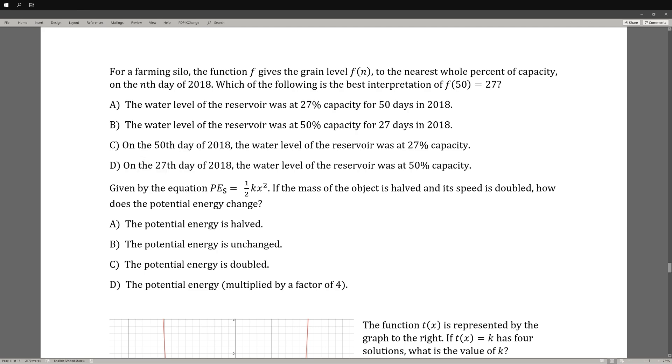Let's move on to C. C would be correct because 50 replaces n, and n represents the nth day of 2018. And that's equal to the whole percent of capacity, which is 27. So it's equal to 27 percent capacity. So C would be the correct answer.